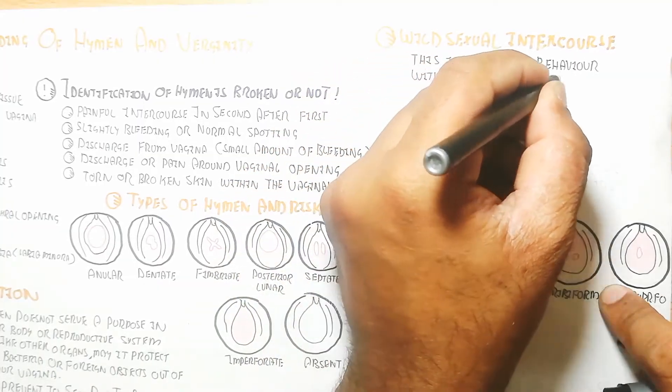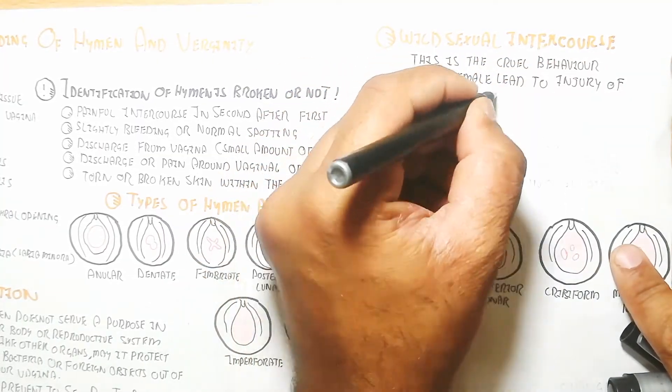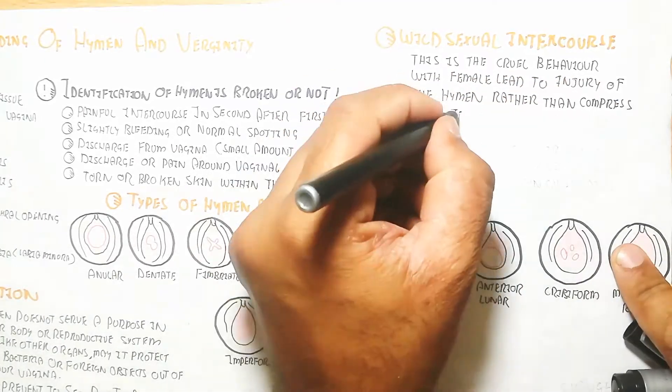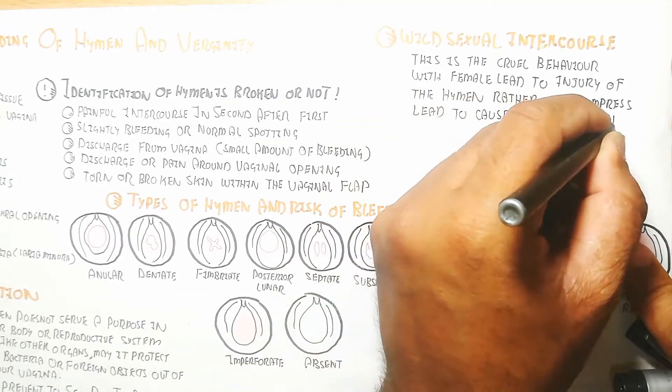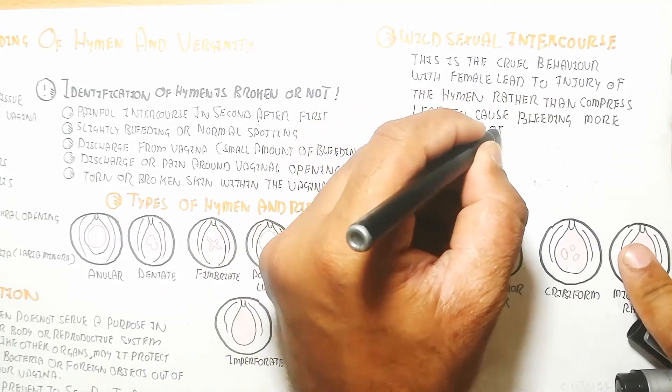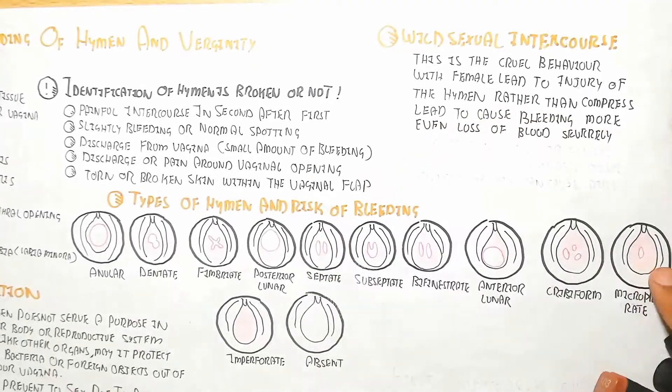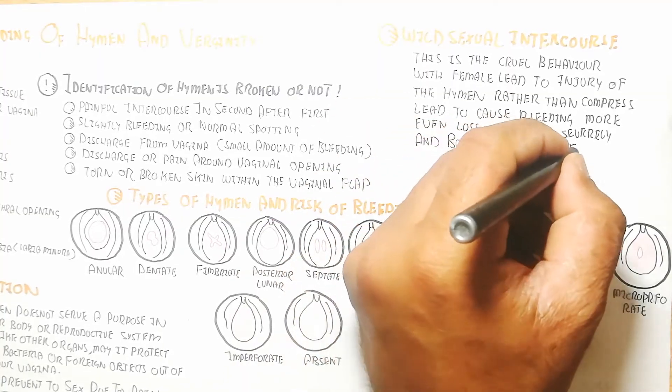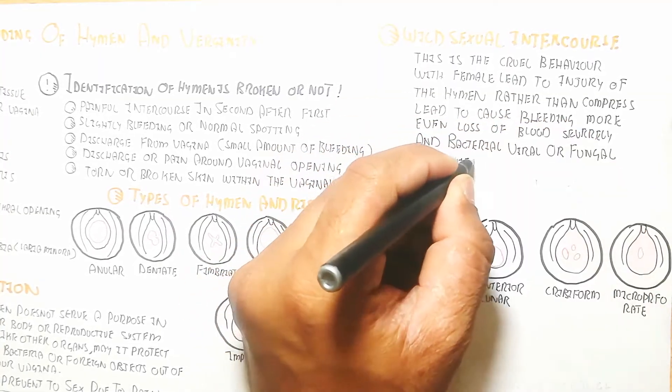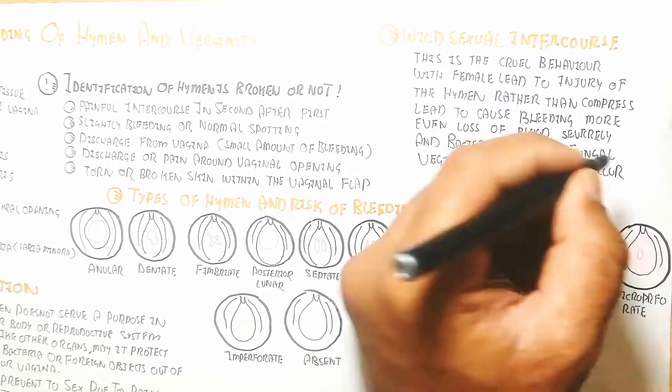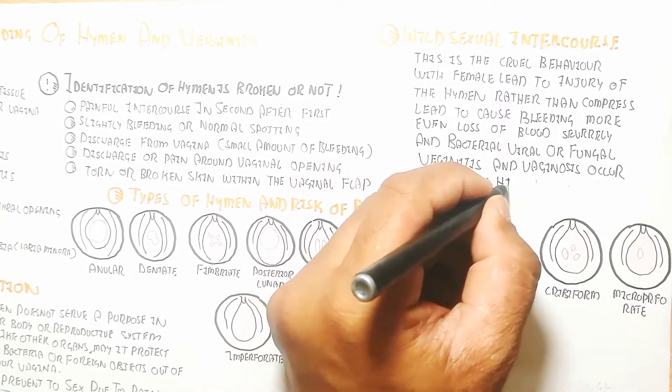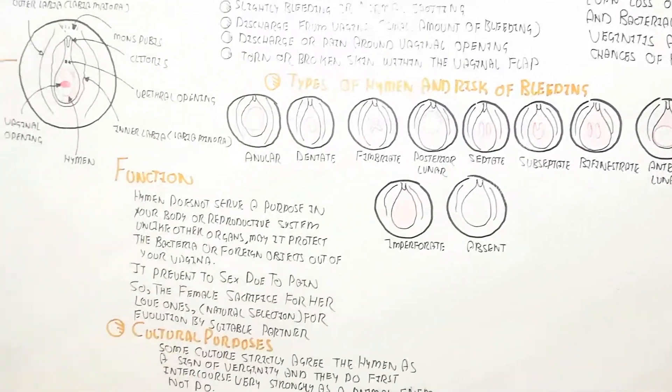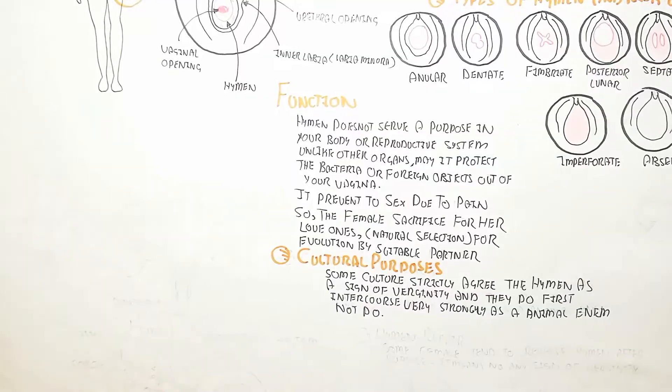This is the identification as a signature for the female's first intercourse. That is the sign of virginity. Wild sexual intercourse is cruel behavior with females, leads to injury of the hymen rather than compression, causes more bleeding, even severe loss of blood, and bacterial, viral, or fungal vaginitis can occur. Chances of HIV causing AIDS can occur if the male is affected.